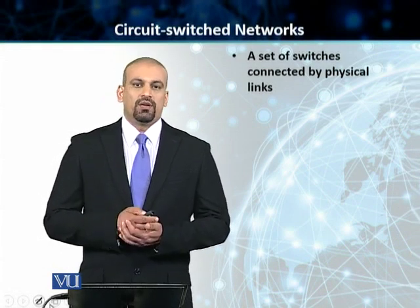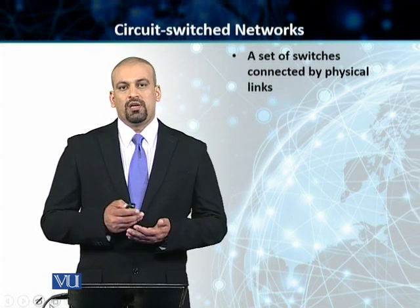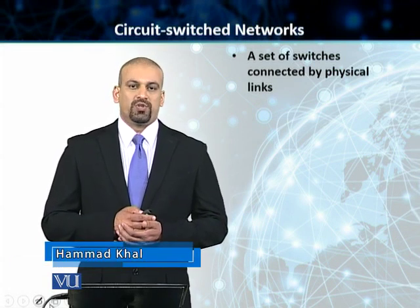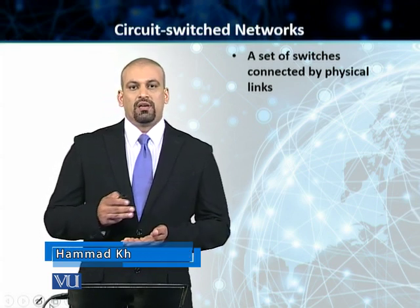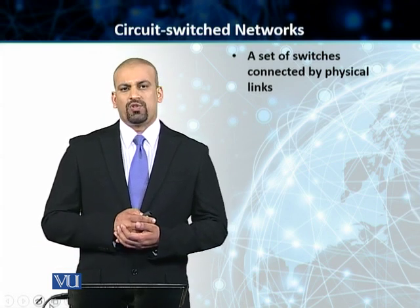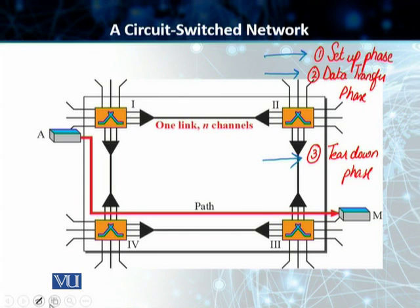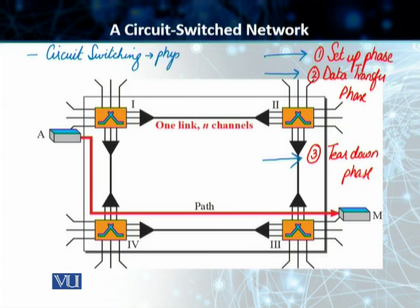We are talking about circuit switch networks. In our previous discussions, we introduced a simple circuit switch network and looked at how the setup phase, the data transfer phase, and the connection teardown phase work. Before we leave this discussion, I want to go through a couple of concepts. Circuit switching is a physical layer concept — circuit switching happens on the physical layer.